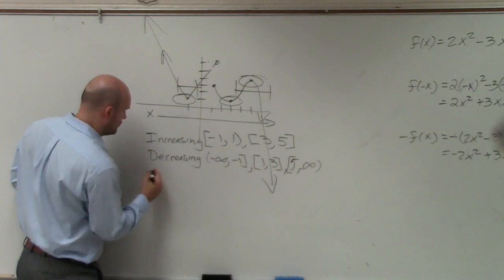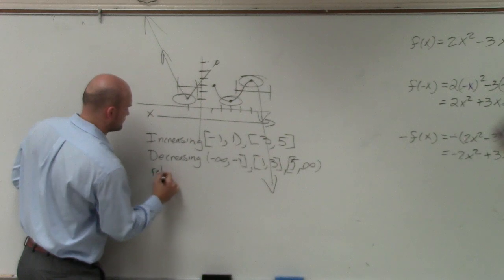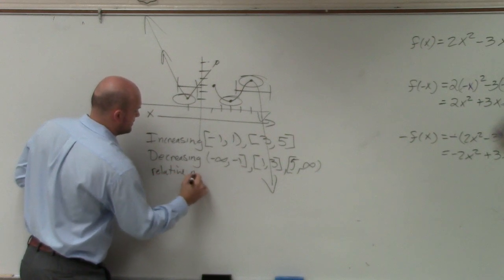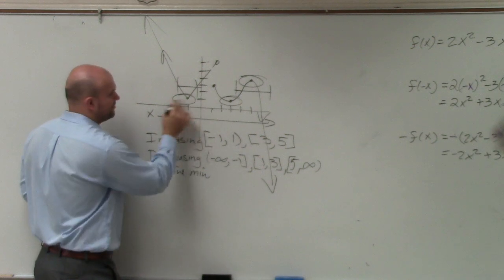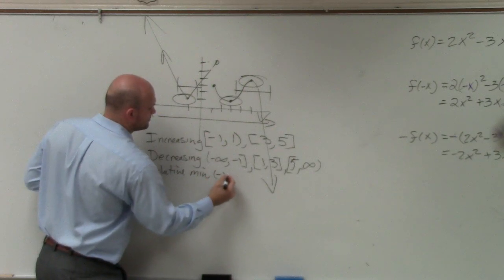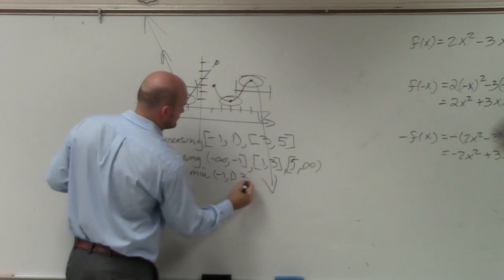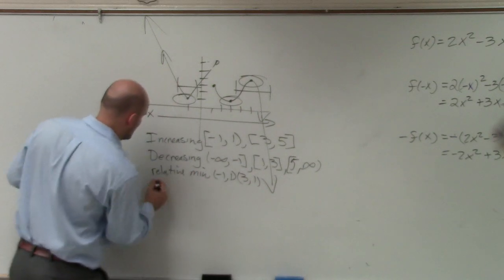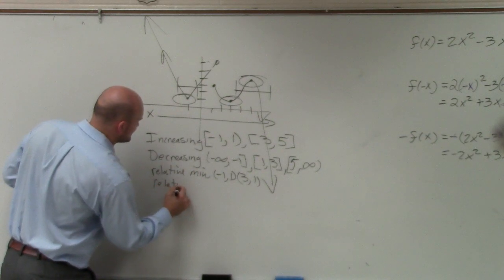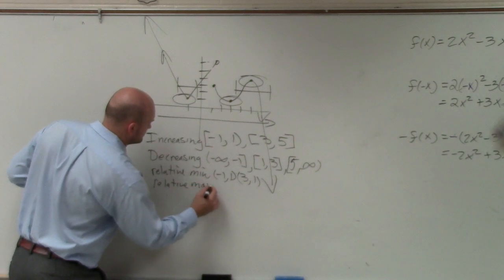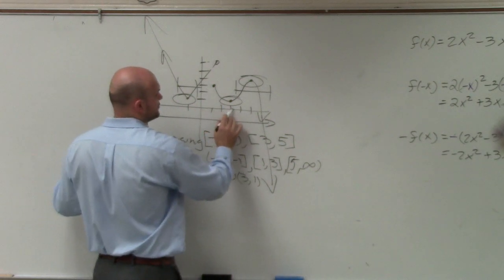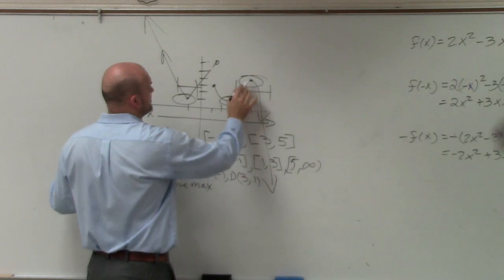So your relative or local min is going to be the points negative 1, 1 and 1, 3, 1. Whereas your relative max is going to be 3, 4.